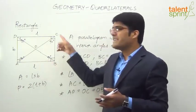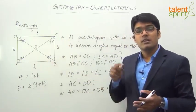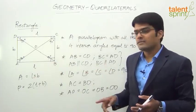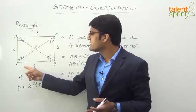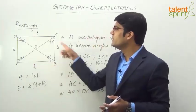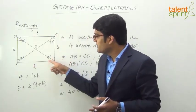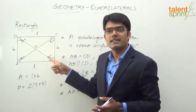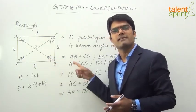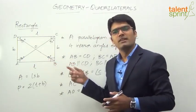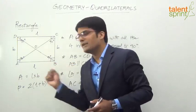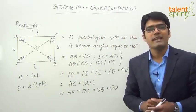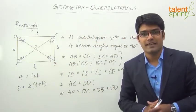As mentioned earlier, the area of any quadrilateral can also be taken as the product of two adjacent sides into the sine of the included angle. The product of two adjacent sides is L into B, and the included angle is 90 degrees. So area equals L times B times sine 90°, and since sine 90° equals 1, the area is simply L times B.